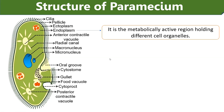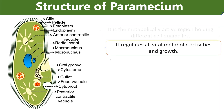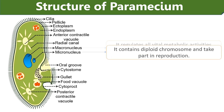Paramecium contains one kidney-shaped macronucleus and a small micronucleus. The macronucleus regulates all vital metabolic activities and growth, whereas the micronucleus contains diploid chromosomes and takes part in reproduction.